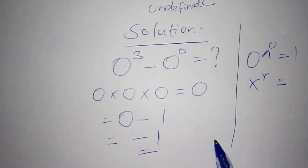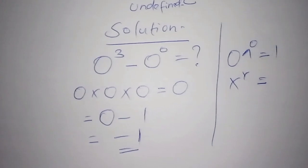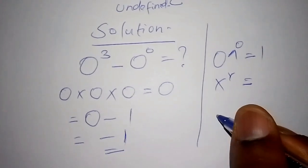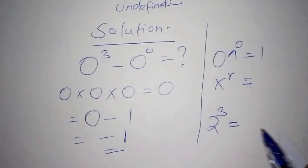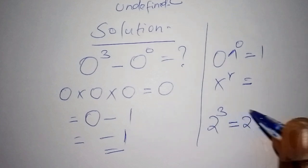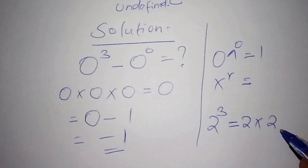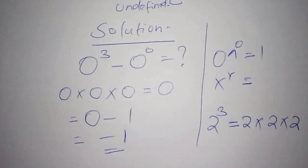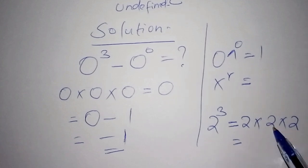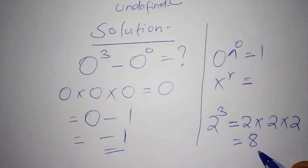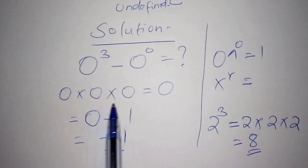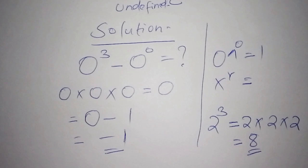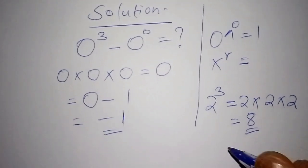The answer could be negative 1, or you could argue it is undefined. For context, in basic maths, if you are given 2 to the power of 3, you multiply 2 three times: 2 × 2 = 4, then 4 × 2 = 8. So 2³ = 8. Similarly, 0³ means 0 × 0 × 0, which gives us 0.